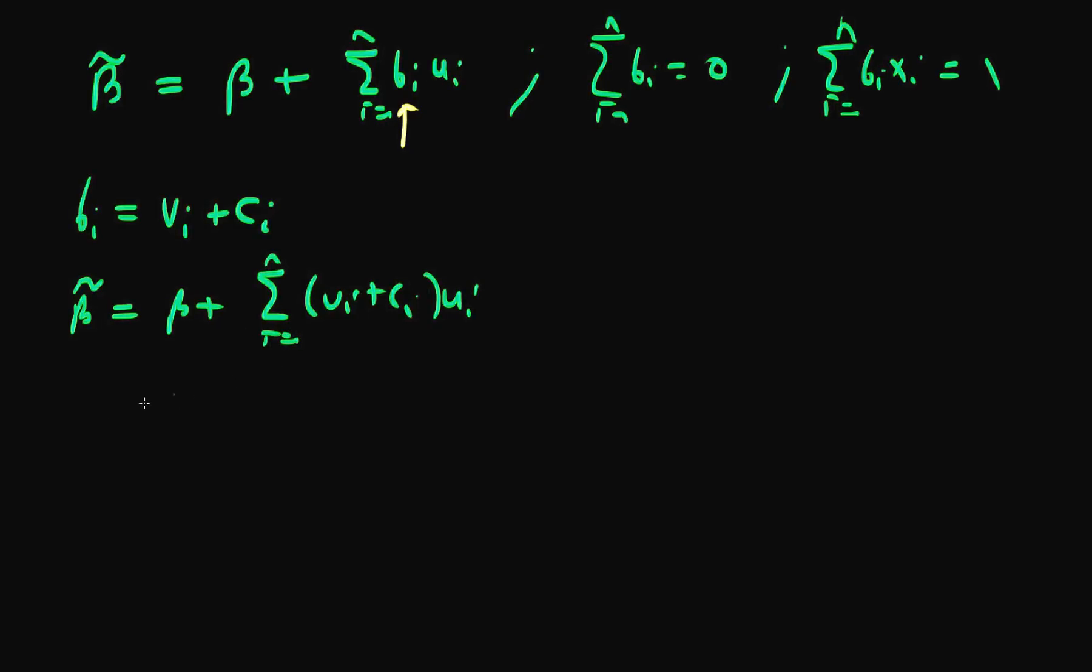When I take the variance of both sides, the variance of beta tilde equals, well, the variance operator passes straight through beta because it's just a constant. A constant doesn't vary so it has zero variance.